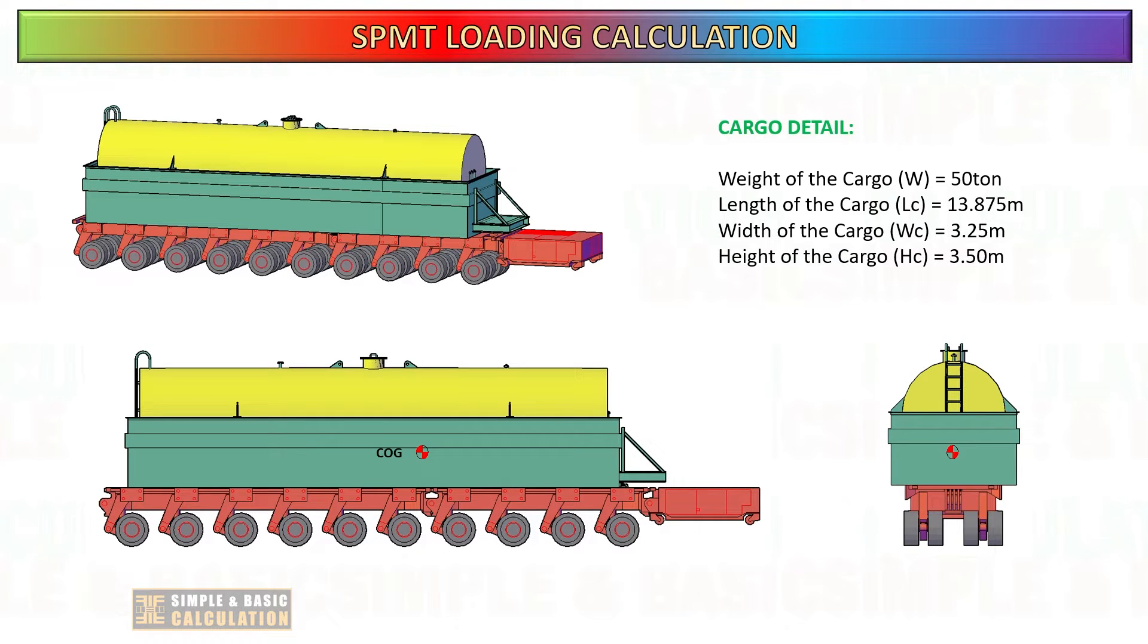For this example we plan to transport a water tank that weighs 50 tons and other parameters of the tank are mentioned in the slide. Let's consider the center of gravity of the water tank is not in the center.